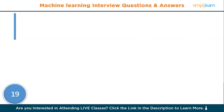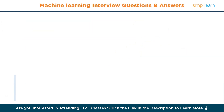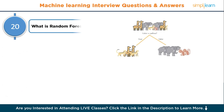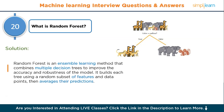Question number nineteen: what is a decision tree? A decision tree is a non-parametric supervised learning algorithm used for classification and regression. It splits the data into subsets based on the value of input features, resulting in a tree-like structure of decisions. Question number twenty: what is a random forest? A random forest is an ensemble learning method that combines multiple decision trees to improve accuracy and robustness. It builds each tree using a random subset of features and data points, then averages their predictions.